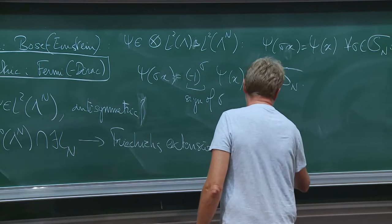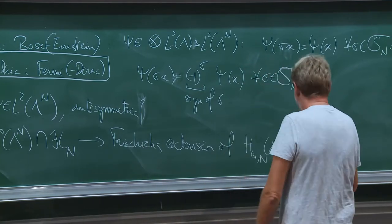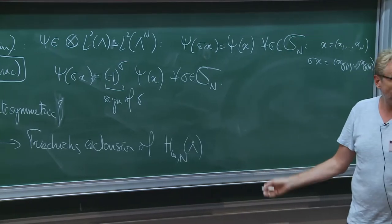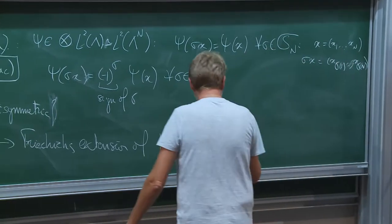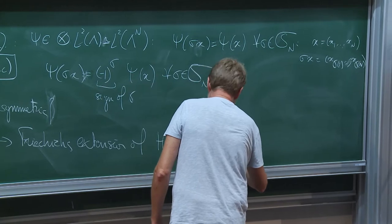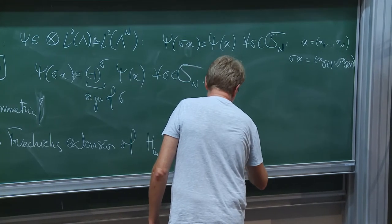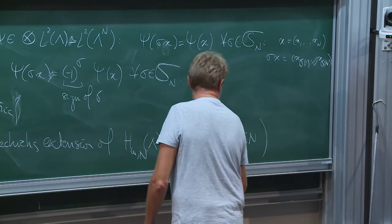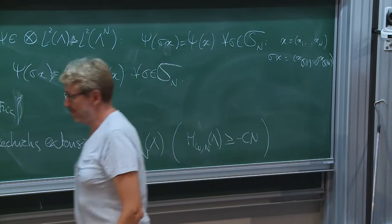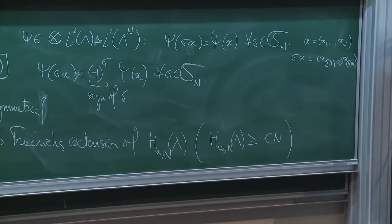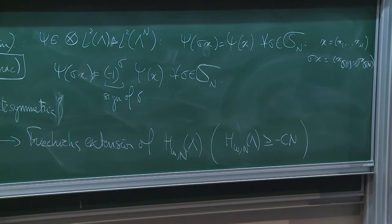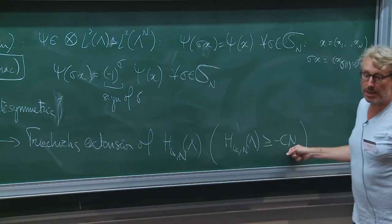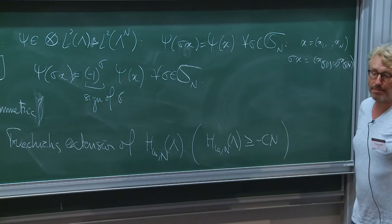So you can look at the Friedrichs extension of H omega n lambda, which will give you — I call it the same name. And you know that it's lower semi-bounded. Obviously you have the following bound: the lowest possible energy for each particle is minus C. So if I add N of them, I get minus C times N.